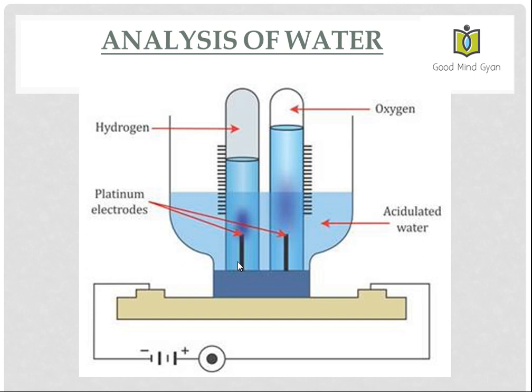Fill half of the voltmeter with water and add to it a few drops of sulfuric acid. Sulfuric acid makes water a good conductor of electricity. And that's the reason, children, we have to add sulfuric acid in this water.